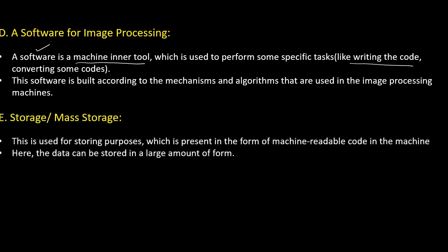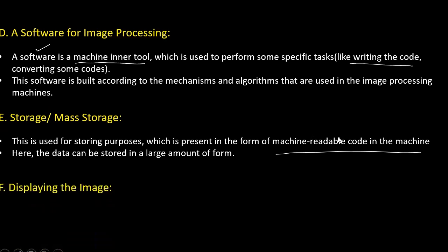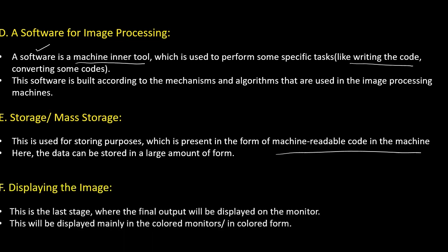The next component is storage. Once the algorithms are done and the image is converted to the user's requirement, we need to store it — mass storage. This is used for storing purposes and is present in the form of machine readable code in the machine. The data can be stored in large amounts. The next component is displaying the image. This is the last stage where the final output is displayed on the monitor, mainly in colored monitors or in colored form.